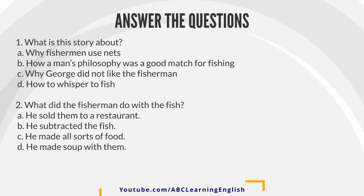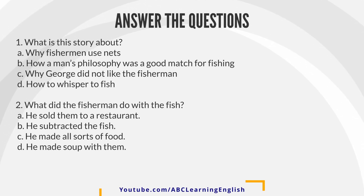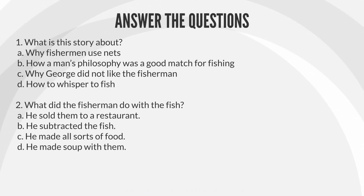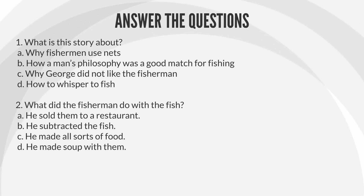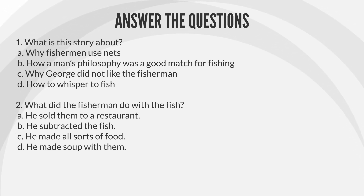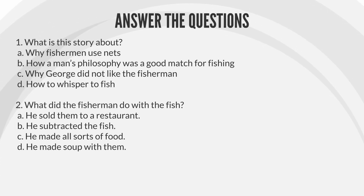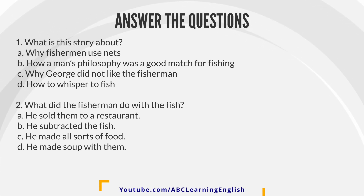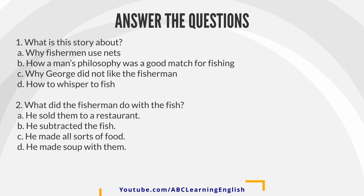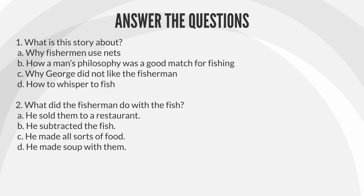Question 2: What did the fisherman do with the fish? A. He sold them to a restaurant. B. He subtracted the fish. C. He made all sorts of food. D. He made soup with them.